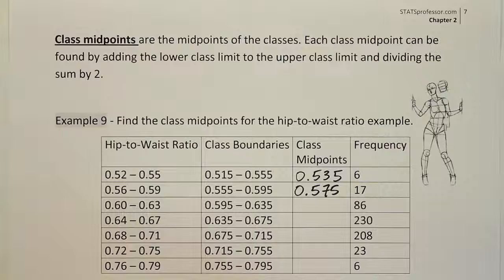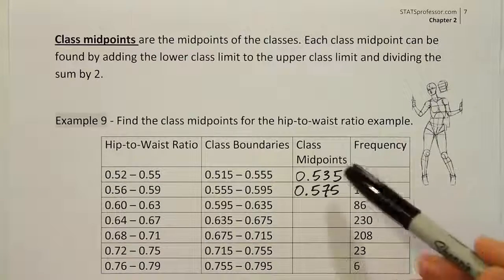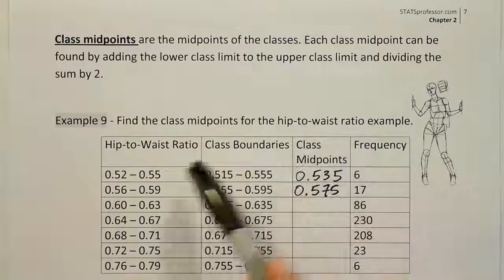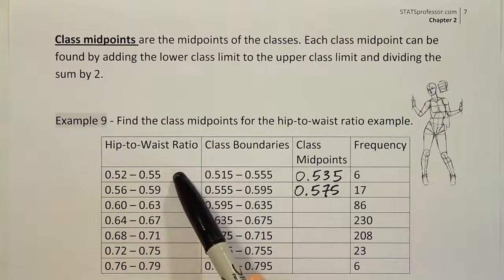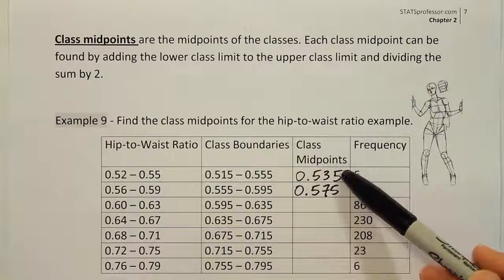So I just want to point out a couple of important things here. I've done two of the class midpoints already just to speed along the process, but what class midpoints are is they're essentially the average of the classes. So we're trying to find one number that's in the middle of the class that can be used to represent the classes.